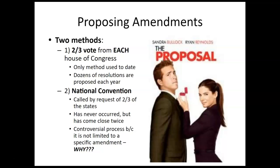The second method is through a national convention. In this process, you'd need two-thirds of the states calling for a national convention to occur so that amendments can be proposed at the convention. It's never occurred — there have been two instances where it almost happened, but it never really did. It's a very controversial process because if you call the states together and enough of them come, theoretically there's nothing tied to a specific amendment — everything's up for grabs, including things already in the Constitution. It could lead to the entire document being changed, which is why it's frowned upon and why our government hasn't used it.